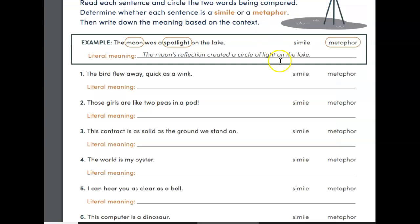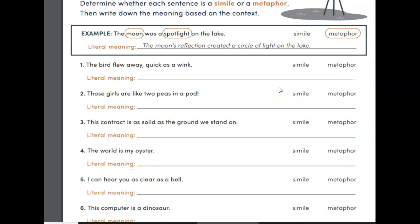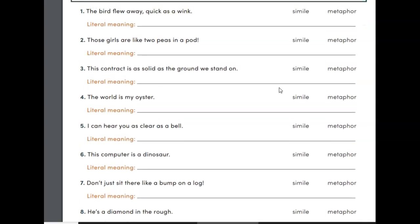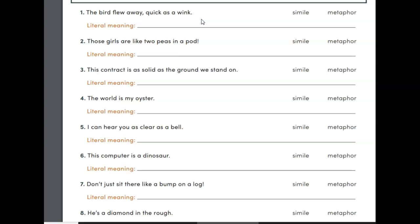So let's look at a little bit of practice. If I look at this and I say the bird flew away quick as a wink, what is that? Is that a simile or a metaphor? This is a simile. The bird flew away quick as a wink. I am comparing the quickness of the bird flying away to a wink. How fast do you wink? It's pretty quick, very, very quickly. So we're comparing the speed of the bird to the speed of a wink. This is a simile because I'm using as.